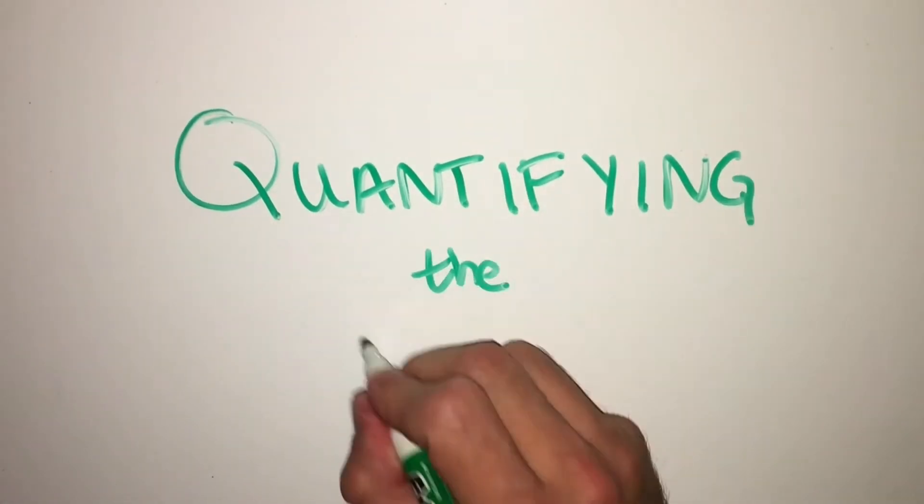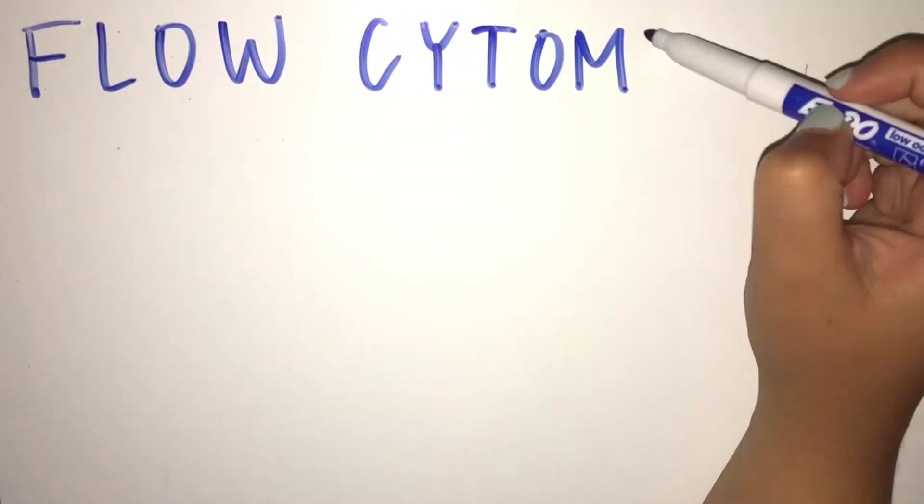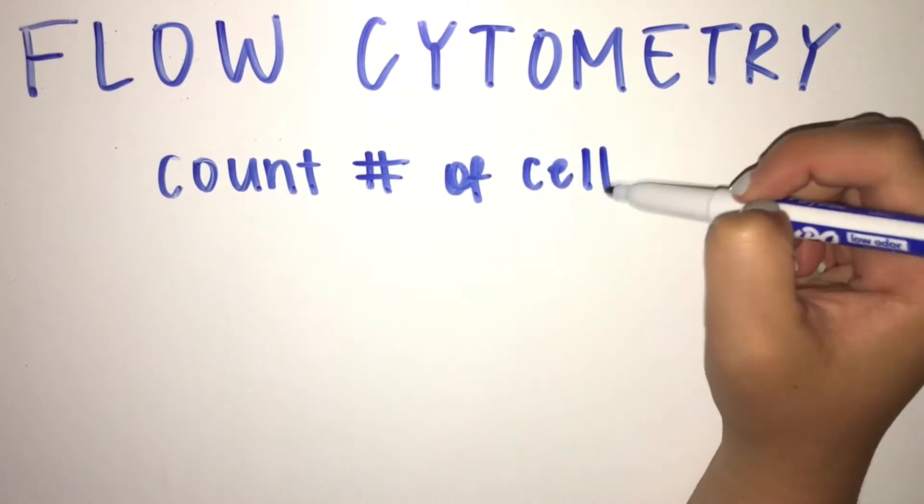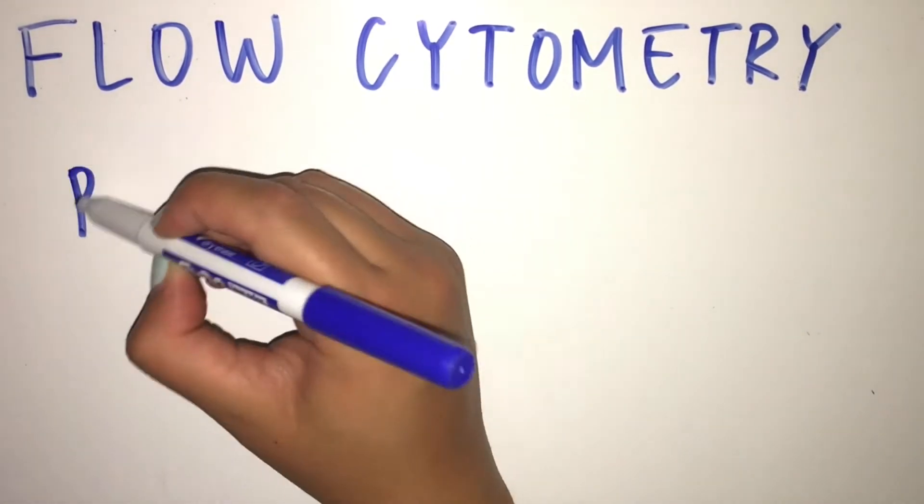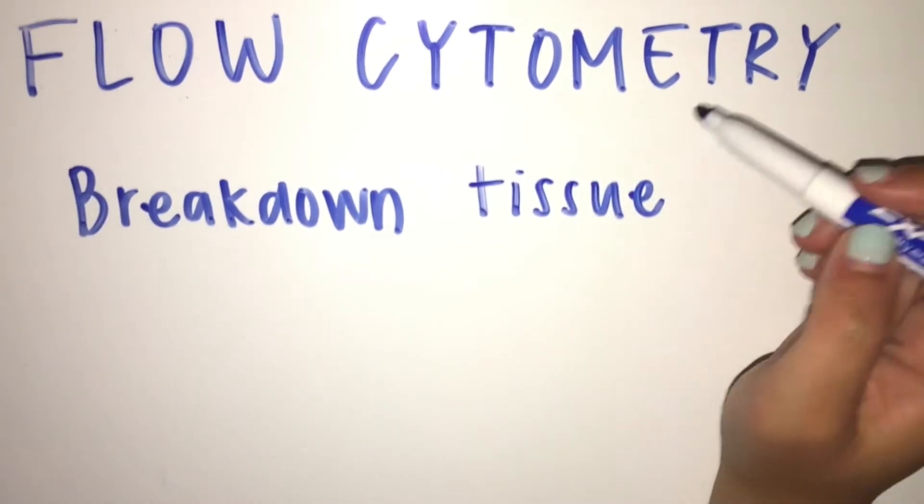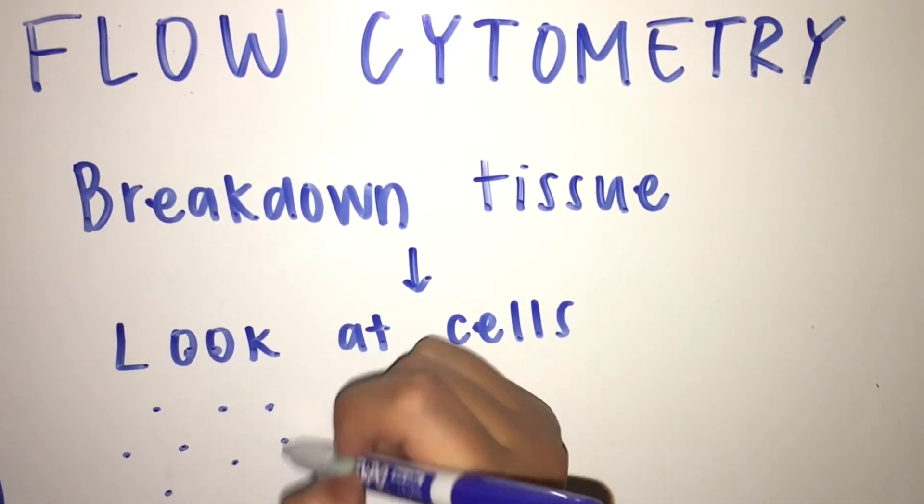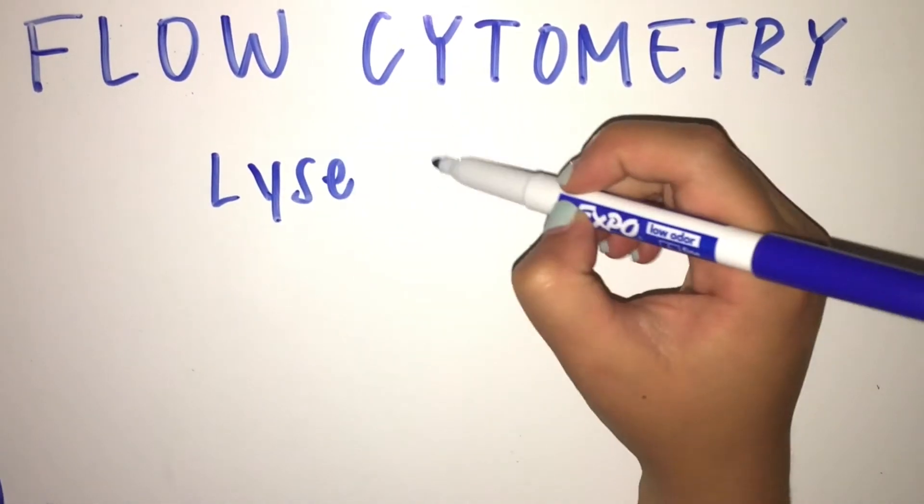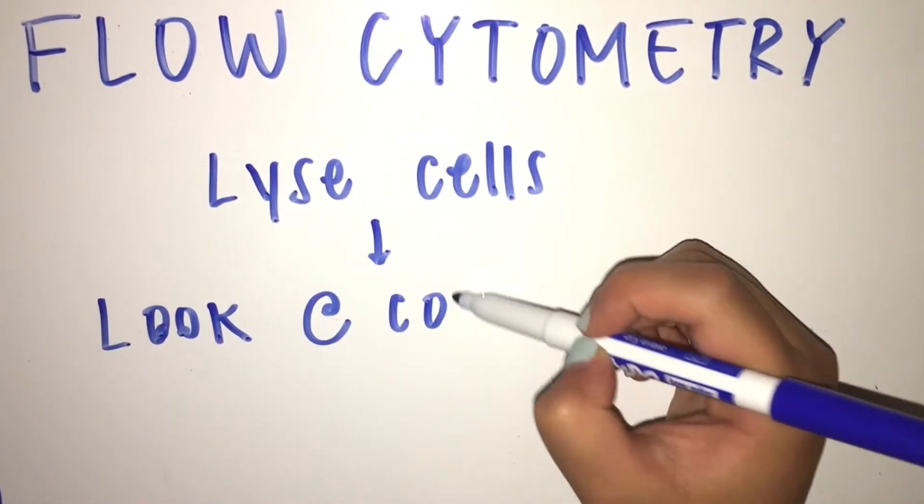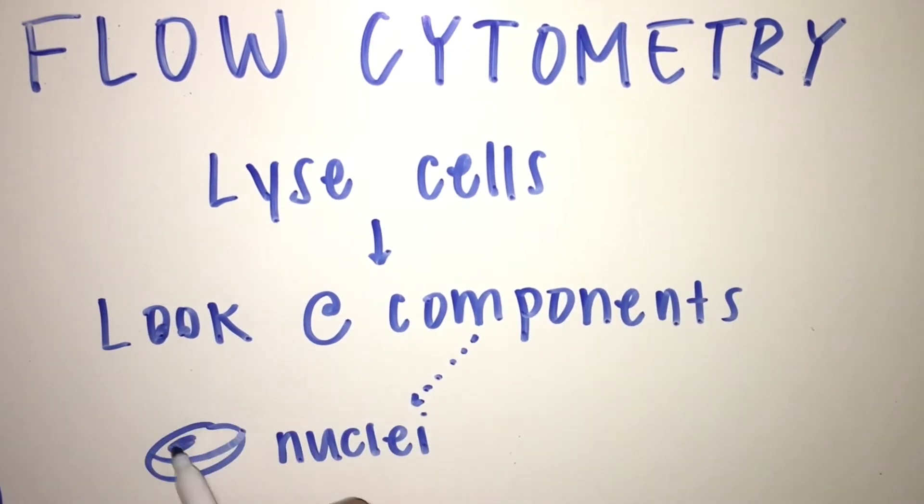Next up, quantifying the cell. Flow cytometry is a technique we use to count the number of cells or cellular components in a given sample. By breaking down a particular tissue sample, we can look at individual cells, such as liver cells or red blood cells. By lysing cells, we can look at the individual cellular components, such as nuclei or mitochondria.